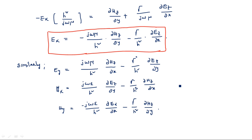Any wave that propagates in a rectangular waveguide must satisfy these four equations — describing the electric field in X and Y directions and the magnetic field in X and Y directions. EZ and HZ are already known: in TE mode EZ = 0 and HZ is non-zero; in TM mode EZ is non-zero and HZ = 0.